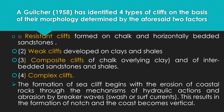Composite cliff involves different structure or rocks in a complex formation. The formation of sea cliff begins with the erosion of coastal rocks through the mechanism of hydraulic action and abrasion by the breaking waves. The primary erosional activities are hydraulic action and abrasion, which combine to form a notch going vertical.